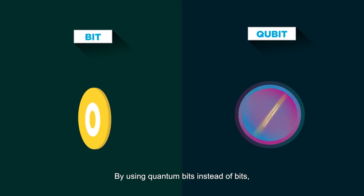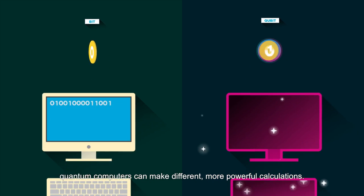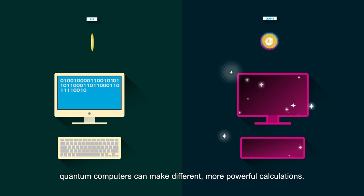By using quantum bits instead of bits, quantum computers can make different, more powerful calculations.